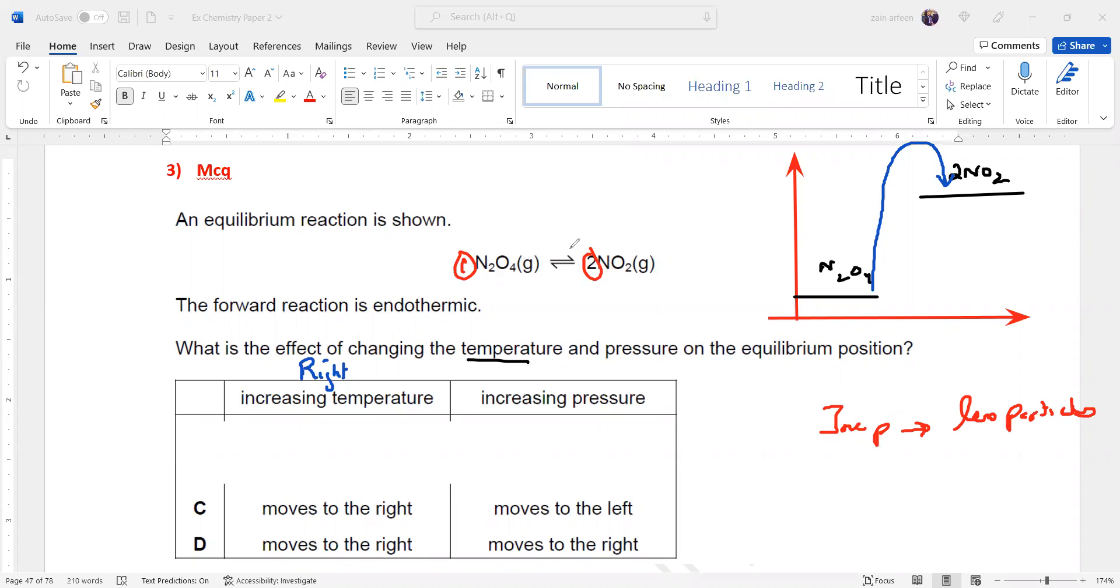In the reactant side we have less particles, so it will shift towards the left hand side. Increasing pressure shifts the balance towards the side where we have less particles. So increasing temperature causes shifting towards right, but increasing pressure shifts towards left.